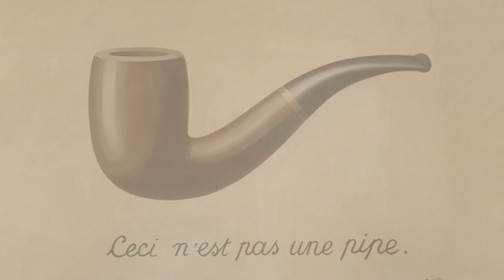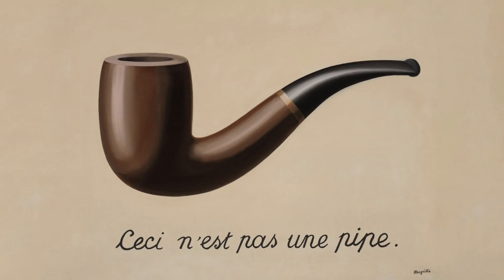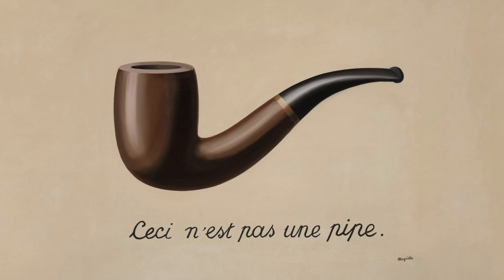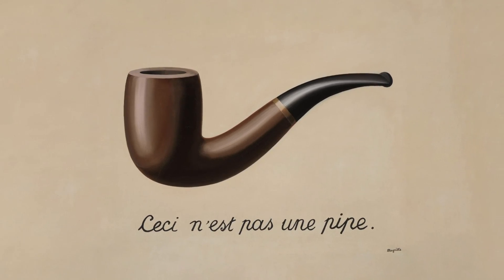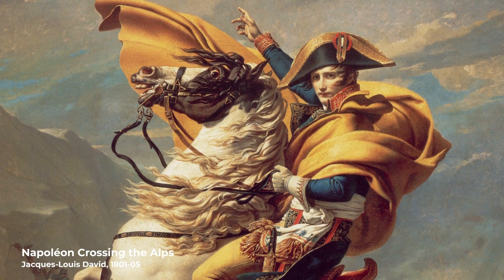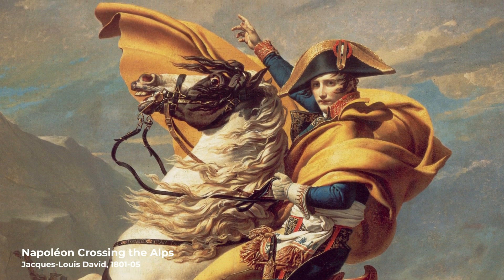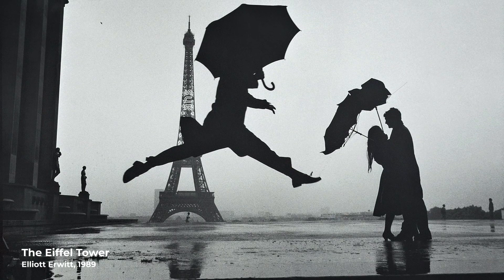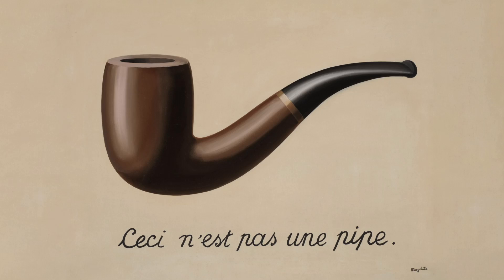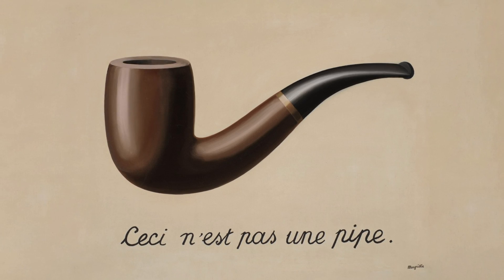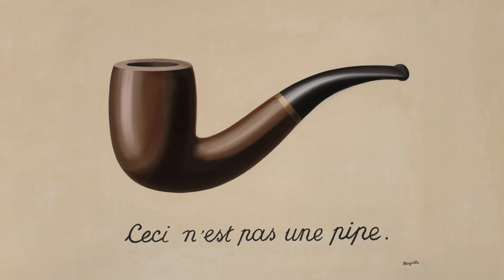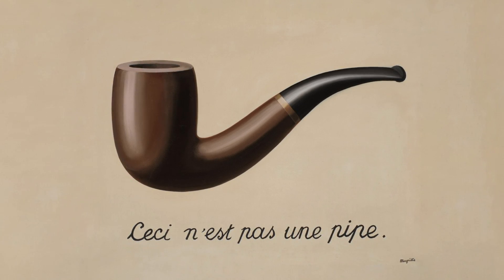The challenge behind this painting is that images are only representations. This is not a pipe, it's an image of a pipe. This is not Napoleon, this is an image of Napoleon. This is not the Eiffel Tower, it's an image of the Eiffel Tower. What makes images treacherous to Magritte is the fact that they disguise themselves as an object without really being one.